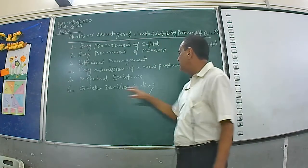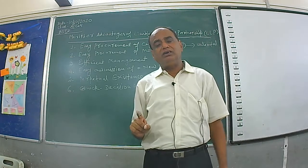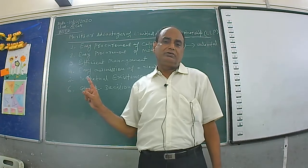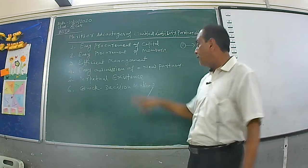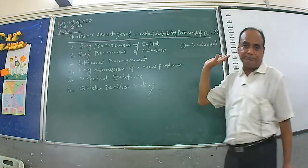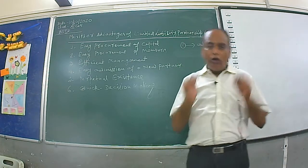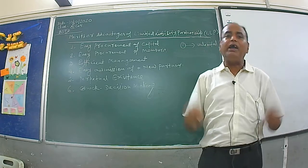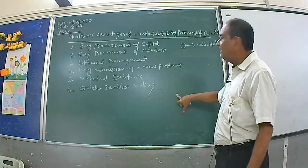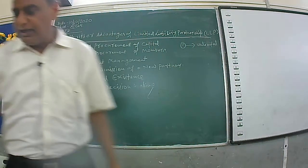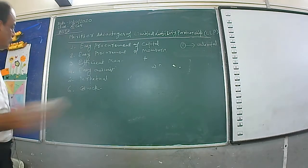Number six: quick decision making. Limited liability partners have no right to participate in decision making. All decisions are taken by the general partners, so the general partners can take all decisions very quickly and promptly. These are the merits or advantages of LLP.